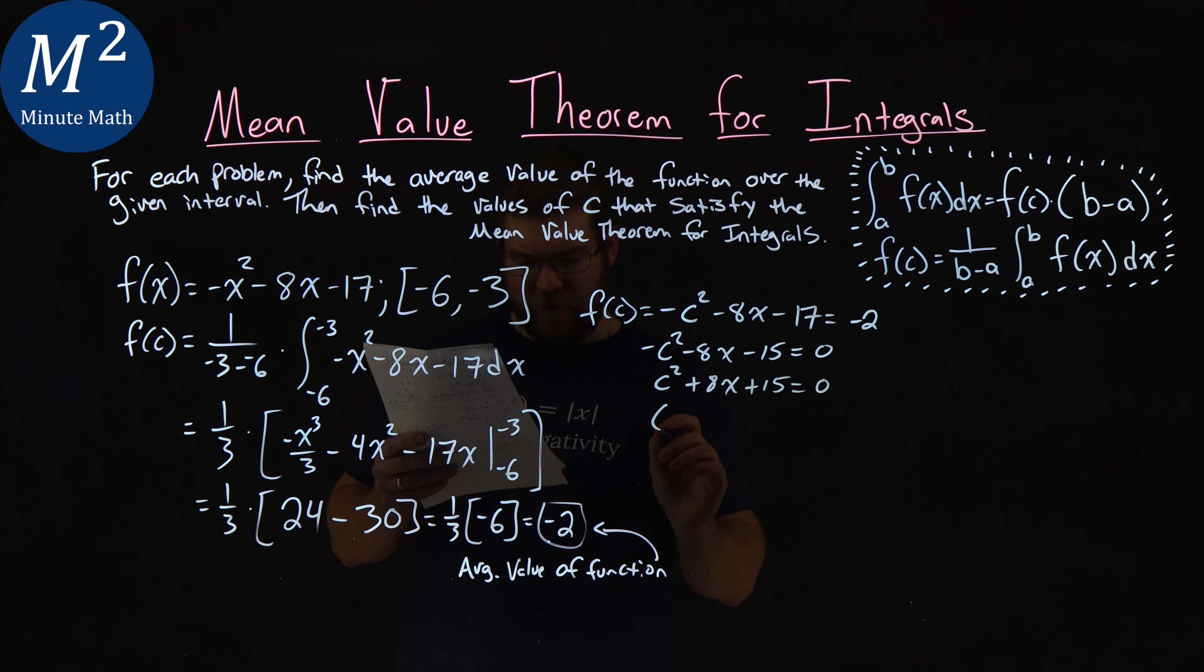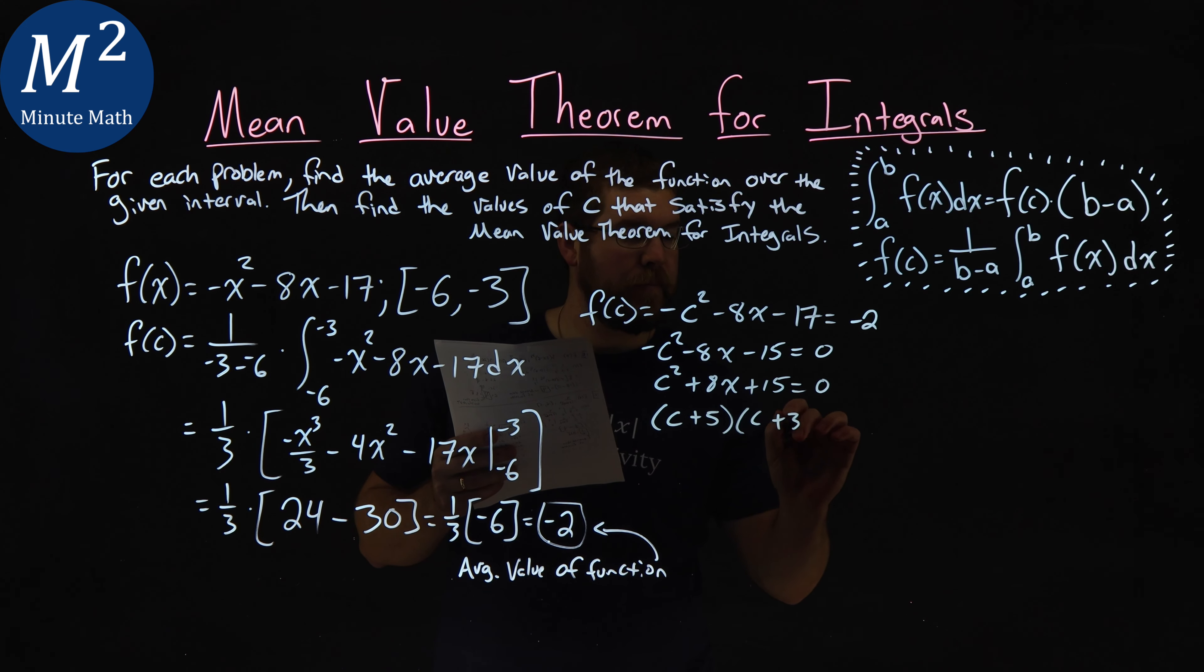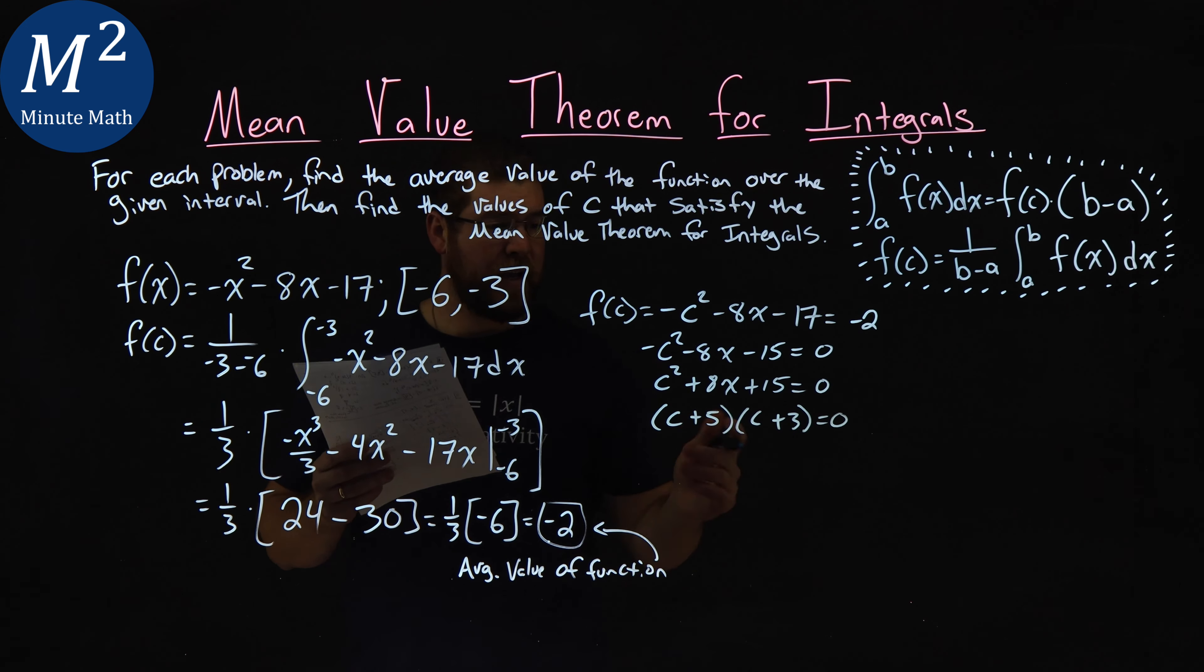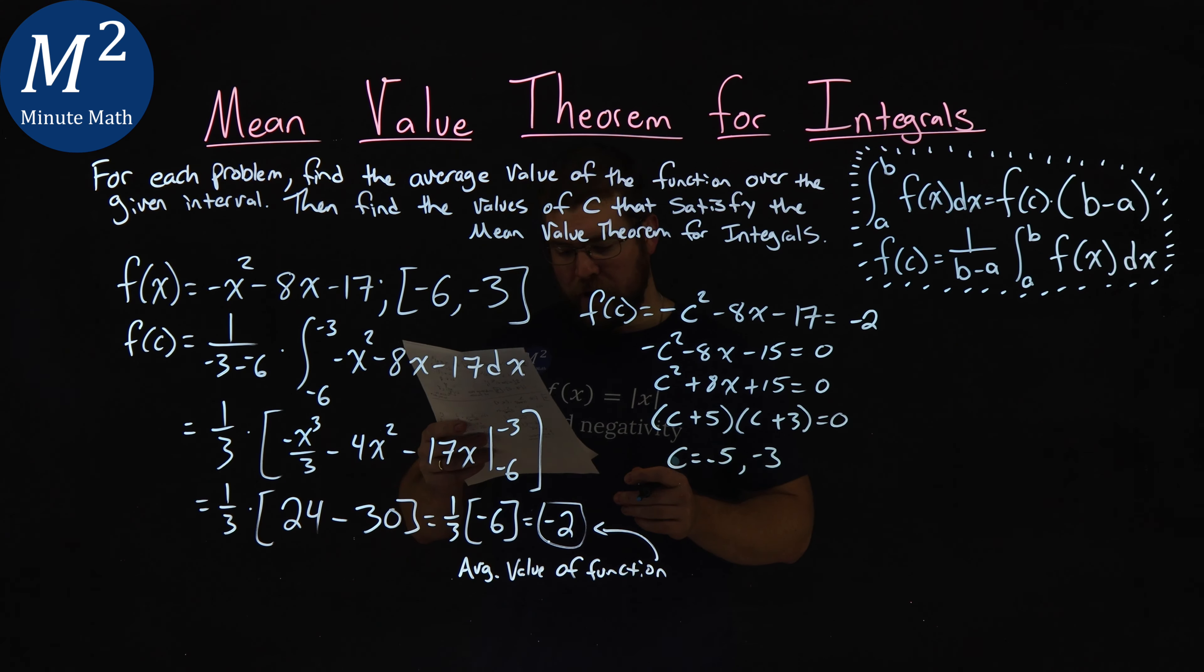This factors—I can't forget factoring in calculus. C plus 5 times c plus 3 equals 0. So that gives us two c values of negative 5 and negative 3. Both are within our interval here.